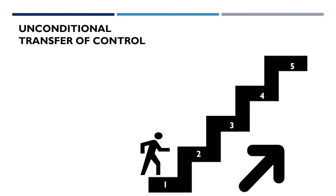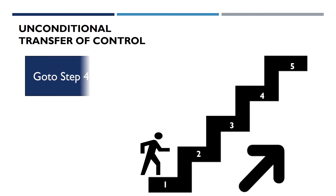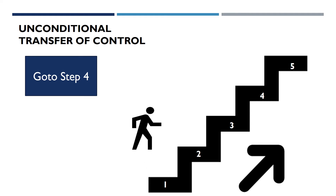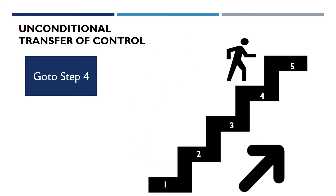For example, if I say you go to step number four without any condition, by skipping step number two and three, then you will move on to step number four. This is how the program control switches from one line to another by unconditional transfer of control.